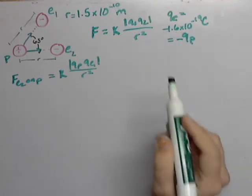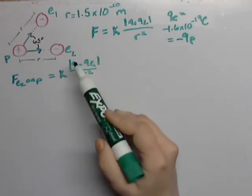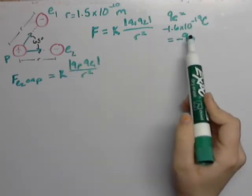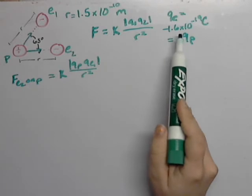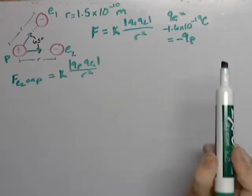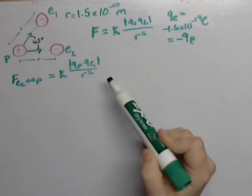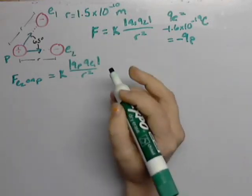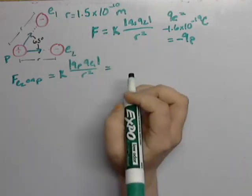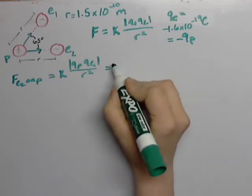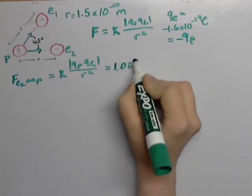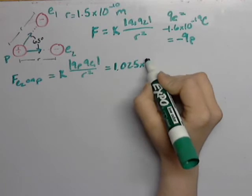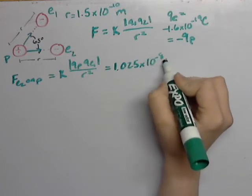This is a constant. These two are both this, so we can just take 1.6 times 10 to the negative 19 and square it. And then we can input this R into here. And when you calculate that, you should get 1.025 times 10 to the negative 8 newtons or thereabouts.